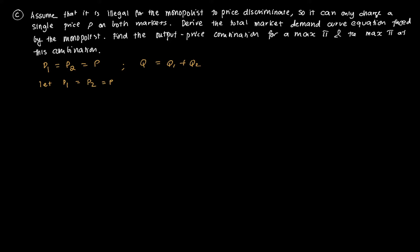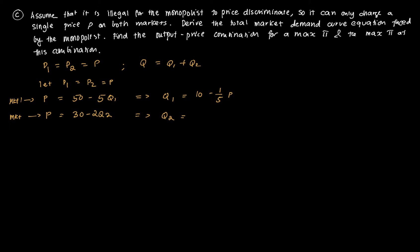We rewrite each demand function in terms of Q. For market one: P equals 50 minus 5Q1 gives Q1 equal to 10 minus one-fifth P. For market two: P equals 30 minus 2Q2 gives Q2 equal to 15 minus one-half P.